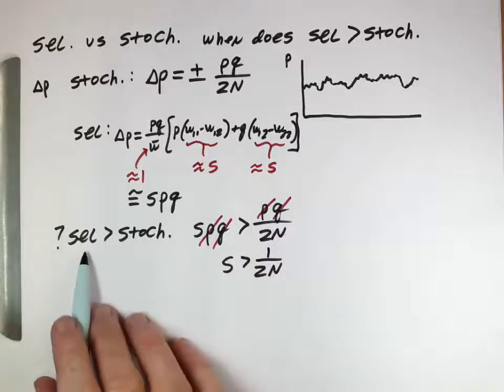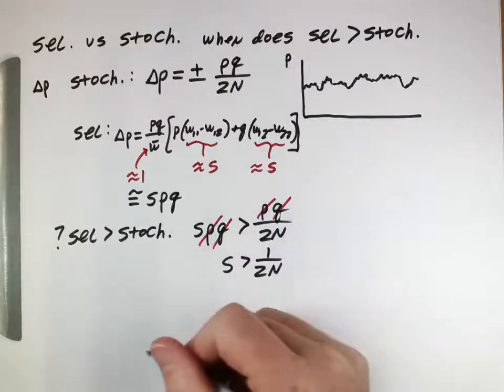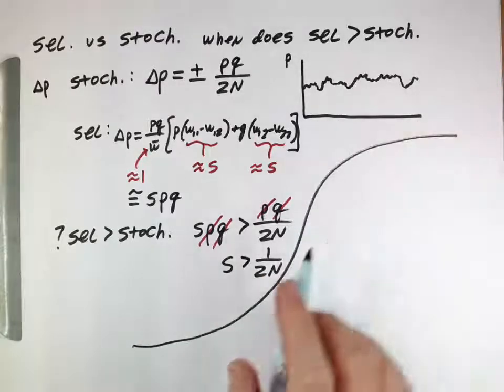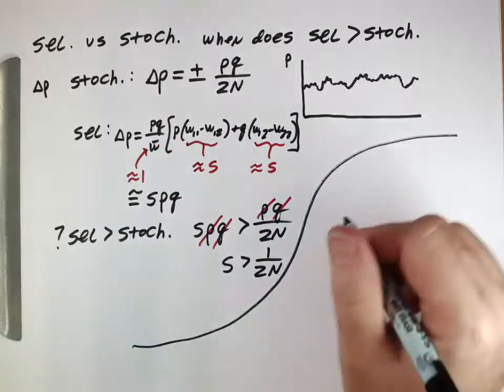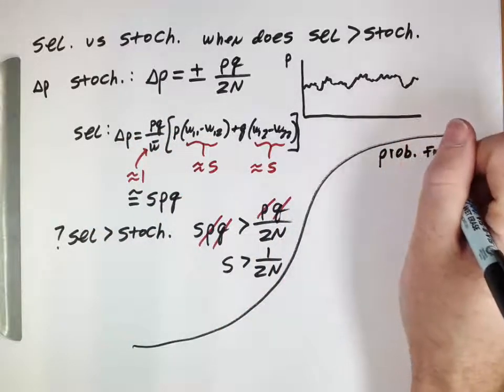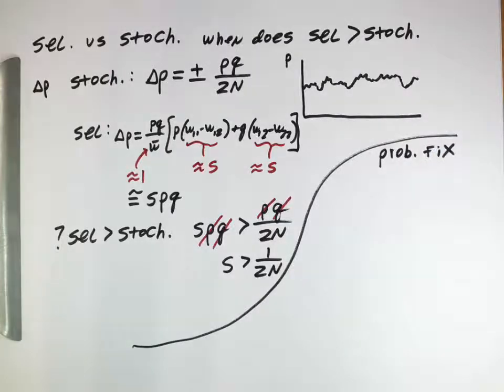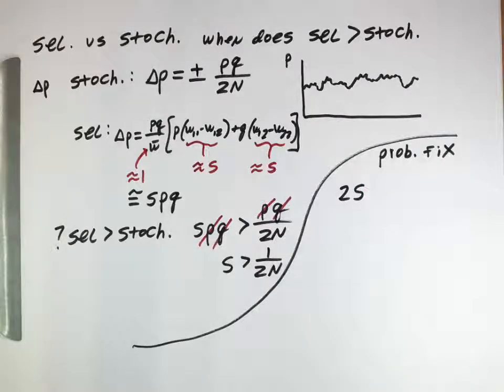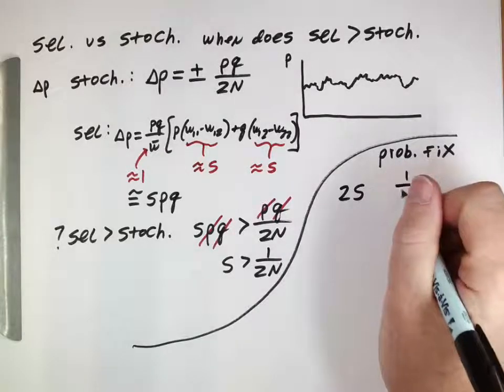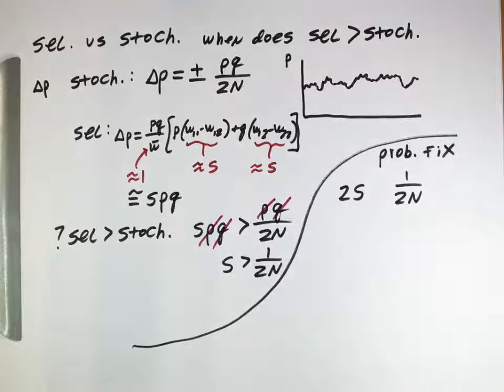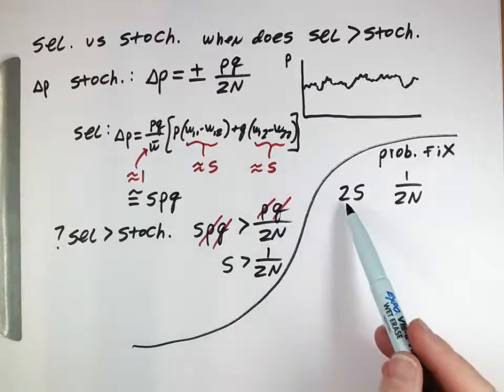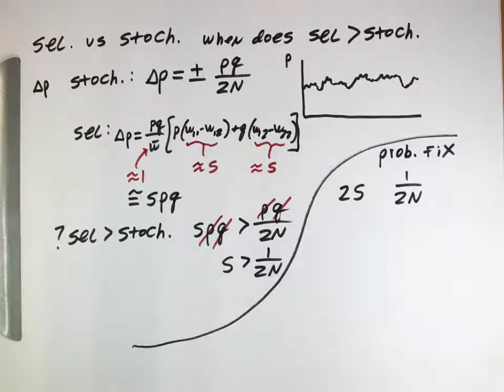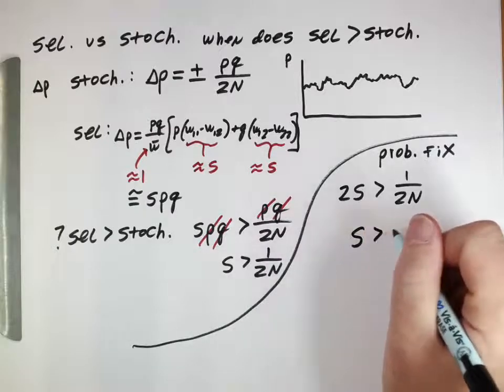Another way of thinking about when selection is more powerful would be to think about the probability of fixation instead of the change in allele frequency per generation. An advantageous allele, a single copy in a population, has a probability of fixing of 2s. A neutral allele has probability 1 over 2n. Selection is more powerful when 2s is larger than 1 over 2n, which gives us s larger than 1 over 4n.